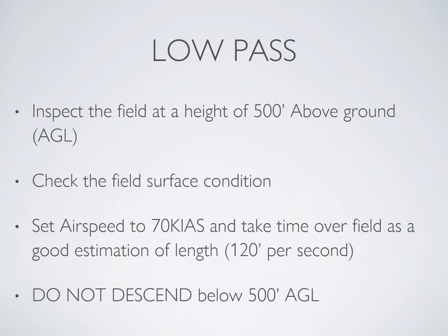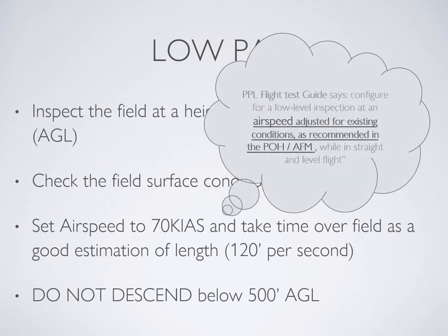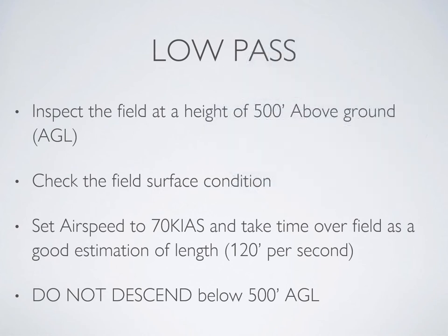The low pass is your field inspection, where you fly past the field with it on your left-hand side at a height of 500 feet AGL and about 70 knots indicated — low and slow. This gives you a chance to time the field: at 70 knots indicated with no wind, your ground speed is about 120 feet per second. Fly across the field, time it, then multiply the seconds by 120 feet to get an approximation of field length. While timing, glance out the window to assess the surface condition. Do not descend below 500 feet AGL.